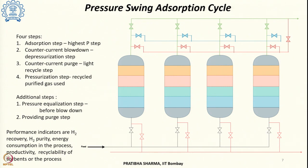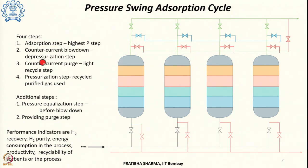Once the bed gets saturated with impurities, the second step is the counter-current blow-down step. After saturation, to regenerate the bed, the pressure is reduced and the feed gas is stopped. The pressure in the blow-down step is not reduced in a single step; it is done in a sequence of steps so that different impurities present in the bed get desorbed. This is also known as the depressurization step.